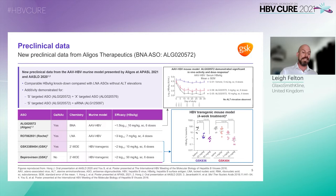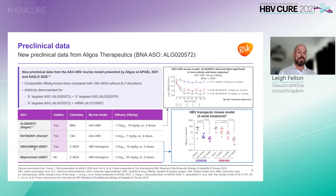HBsAg suppression ranged from minus 1.5 log10 for ALG020572 to minus 3 log10 for Roche's RO7062931. In a different model of HBV transgenic mouse, as was anticipated, higher doses of the unconjugated bepirovirsen were required to achieve similar levels of HBsAg suppression to the GalNAc conjugated GSK3389404.